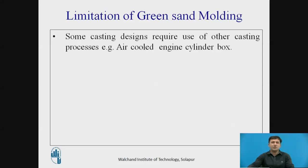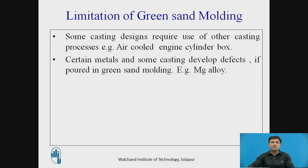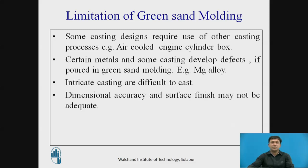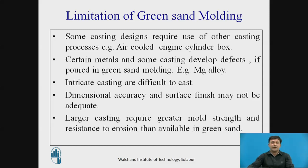Coming to the limitations of green sand moulding: first, some casting designs require the use of other casting processes — for example, an air-cooled engine cylinder block cannot be done with green sand moulding alone. Second, certain metals and castings develop defects if poured in green sand, especially magnesium alloys. Third, intricate castings are difficult to cast. Fourth, dimensional accuracy and surface finish may not be adequate. Fifth, larger castings require greater resistance to erosion than available in green sand.